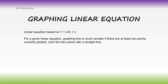A linear equation is based on y equal to mx plus c. For a given linear equation, graphing the line is much simpler if there are at least 2 points correctly plotted. Join the 2 points with a straight line. The straight line is based on the power of x equal to y, so you will have a straight line either upward or downward.